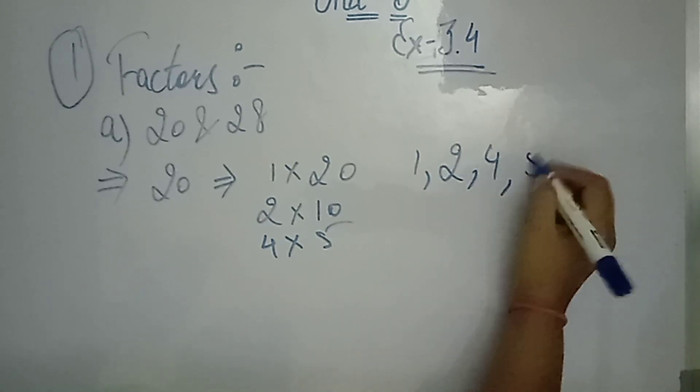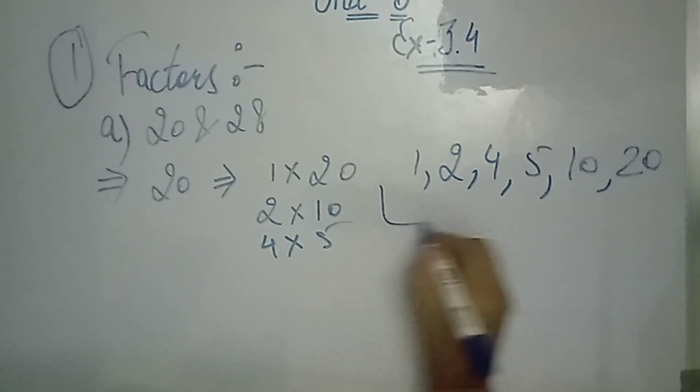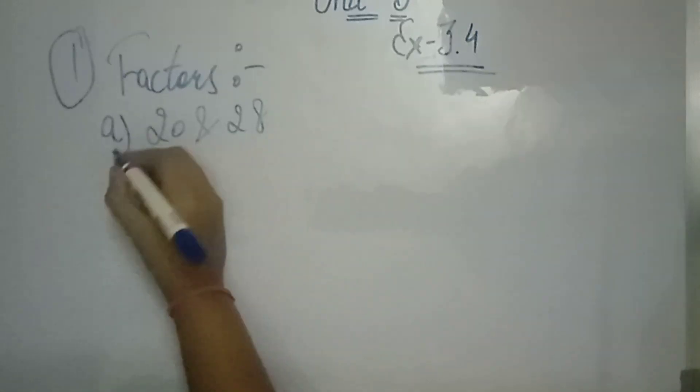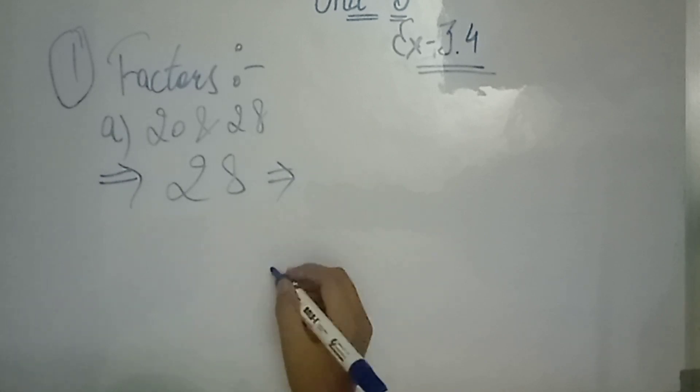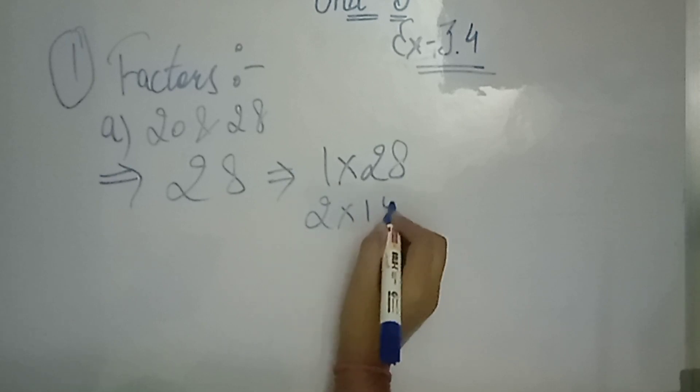So how many factors? 1, 2, 4, 5, 10 and 20. How many factors have been? 20. Now we will do 28. What will the factors of 28? 1 multiplied by 28.